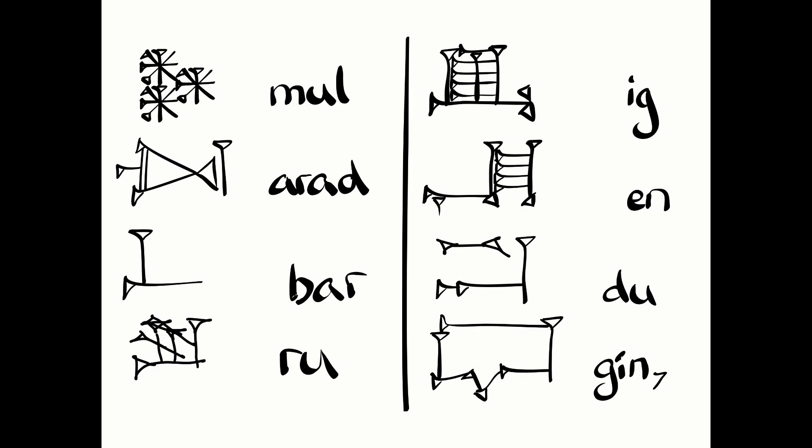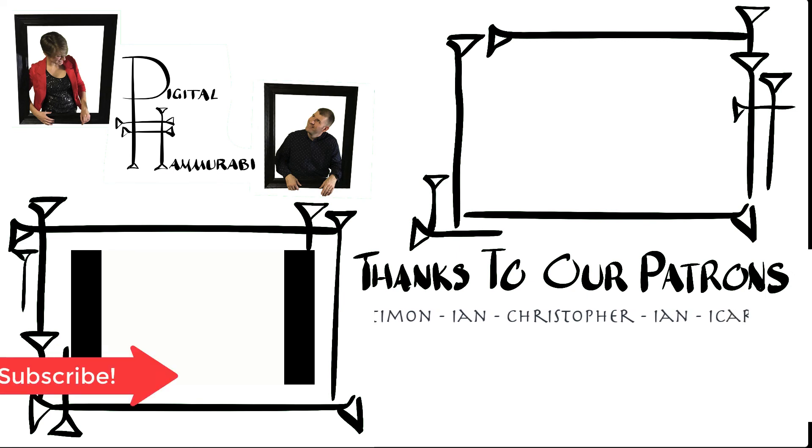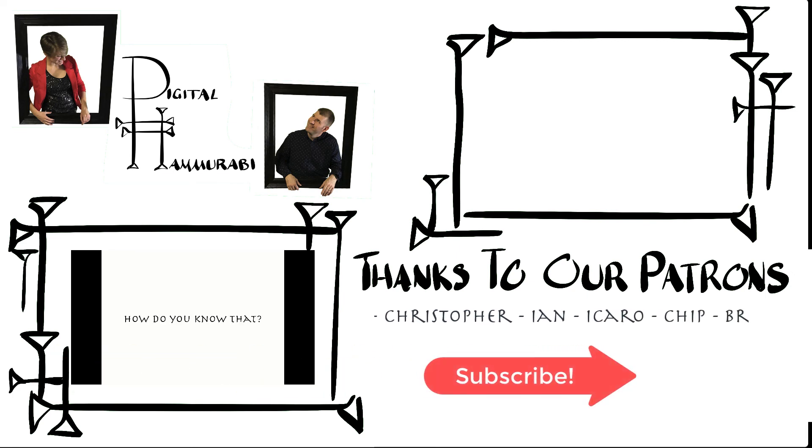And your signs for this lesson: mul, arad, bar, ru, ig, n, do, and gin7. Until next time, resist poor scholarship. Always ask: how do you know that?